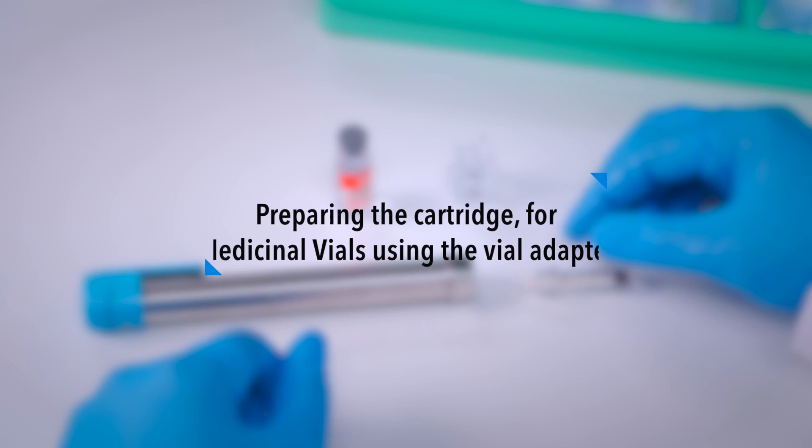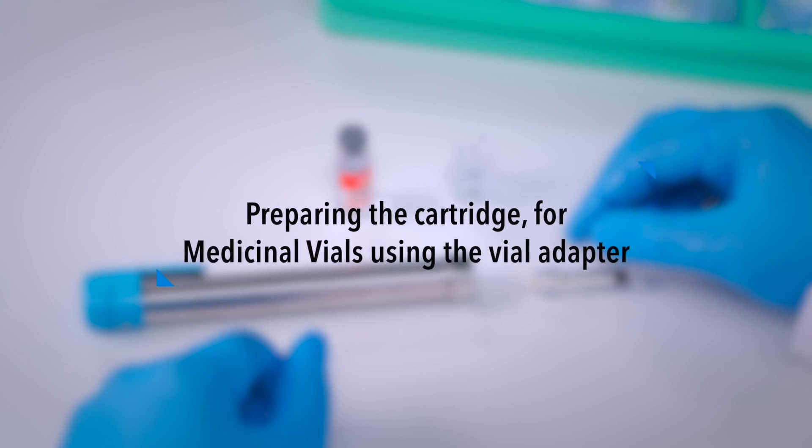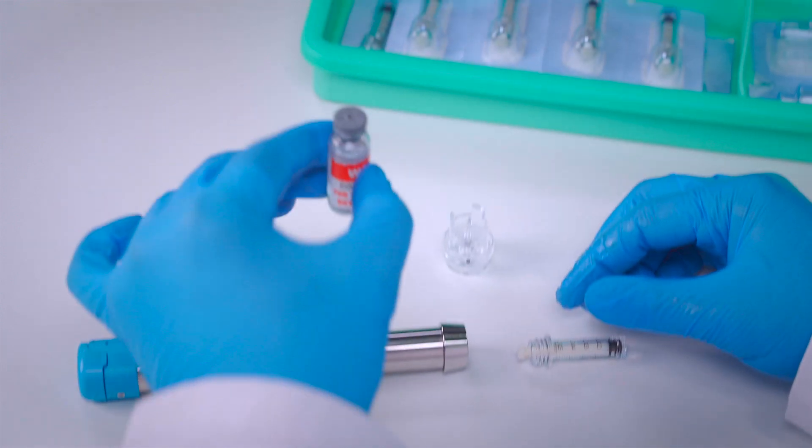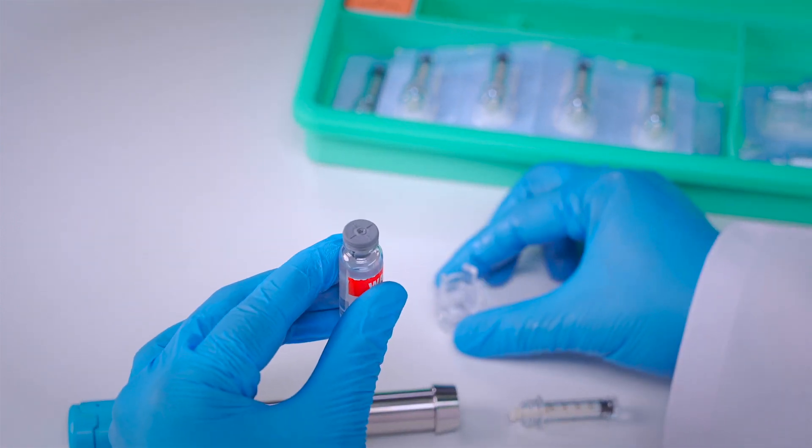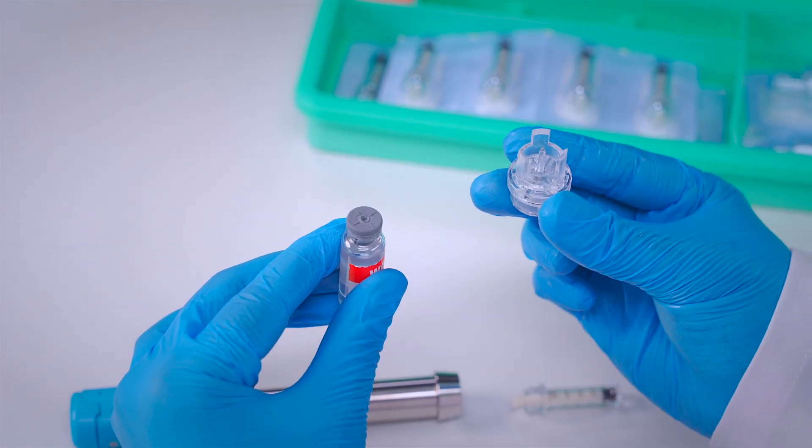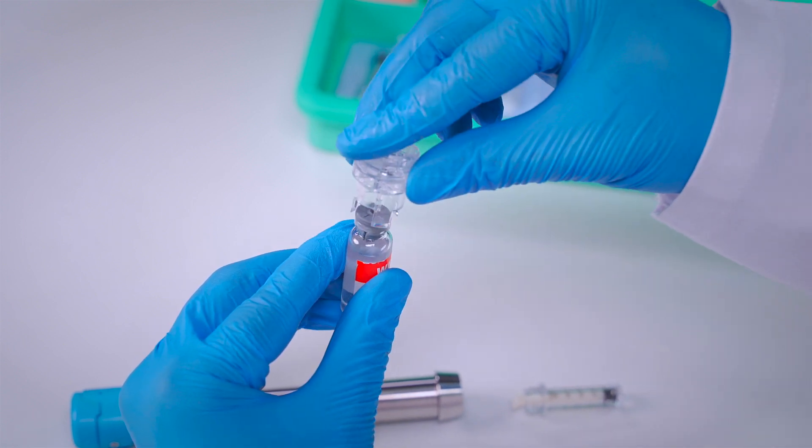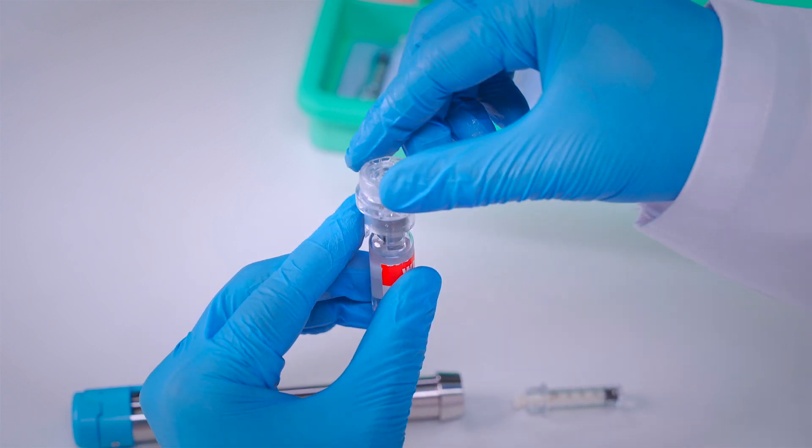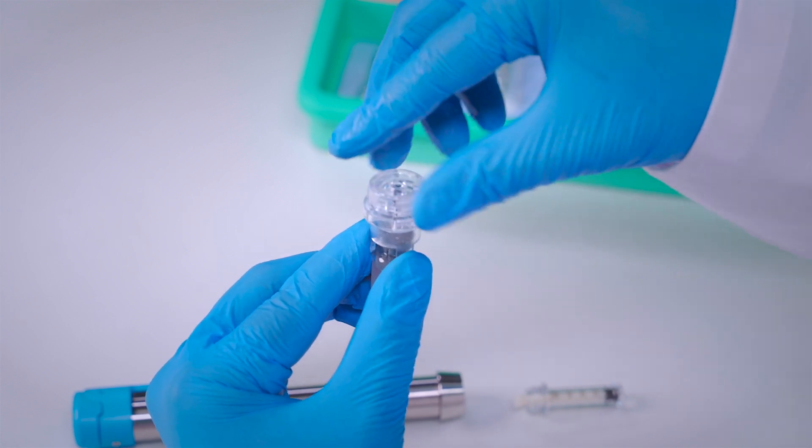Preparing the cartridge for medicinal vials using the vial adapter. In the case of medicinal vials, insert the vial adapter spike into the center of the vial. Remove the safety cap from the other end by turning counter clockwise.